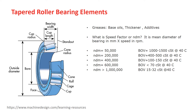Grease has three components: base oils, thickeners, and additives like extreme pressure (EP) additives. Base oils are typically mineral or synthetic. Thickeners can be different types of metal soaps or non-soaps such as polyurea and clay. For roller bearing applications, the majority of the time lithium or lithium complex thickeners are recommended. Additives are selected based on the application and operation of the grease.